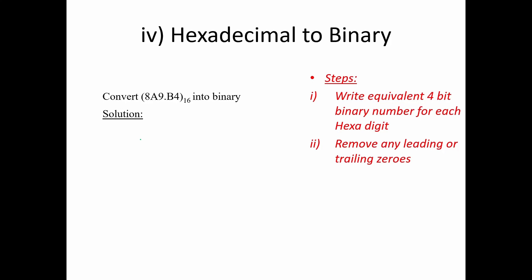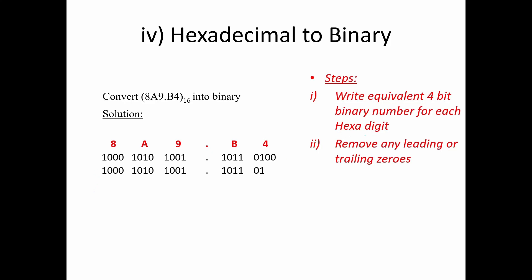Next is hexadecimal to binary. If hexadecimal is given, we write the 4-bit binary number for each hexadecimal digit using the 8-4-2-1 code. For example, 8A9B.4 — writing 4-bit binary for each gives the binary result. The last step is removing any leading or trailing zeros, then write the final answer with base 2.